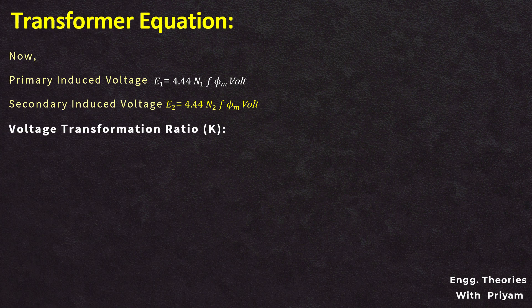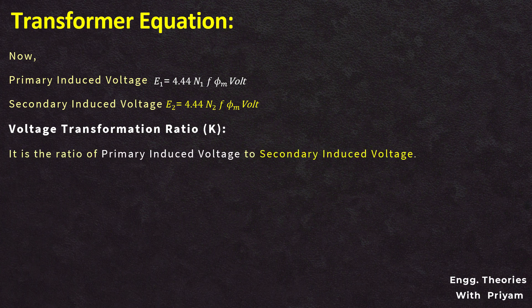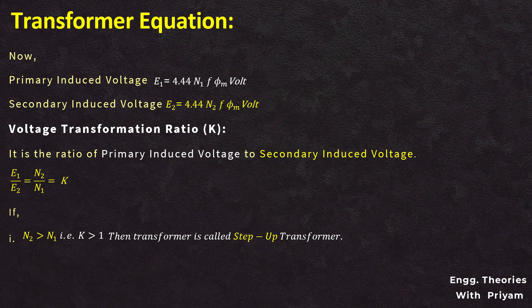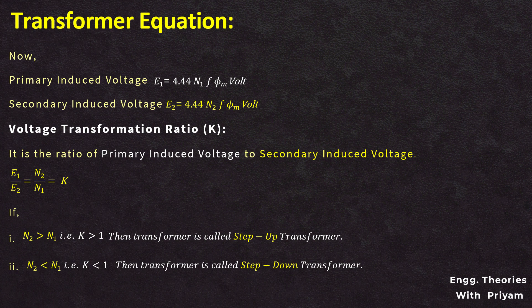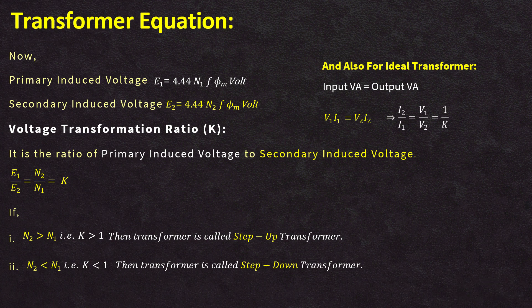The voltage transformation ratio is the ratio of secondary induced voltage to primary induced voltage, E2/E1, which equals the number of turns in the secondary divided by the number of turns in the primary, and is equal to K. If N2 is greater than N1, then K is greater than 1 and this transformer is known as a step-up transformer. If N2 is less than N1, then K is less than 1 and this is a step-down transformer. For an ideal transformer, input volt-ampere equals output volt-ampere, or V1·I1 equals V2·I2, which simplifies to I2/I1 equals V1/V2 equals 1/K.